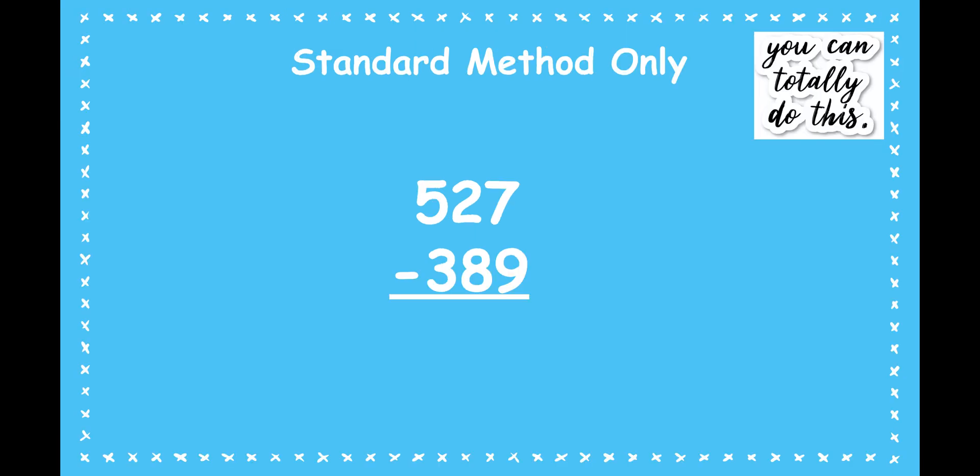Let's do one more problem. This time we're going to take away the place value model, but I just want you to be thinking in your head what's going on when we're ungrouping. Think about the place value involved. I have 527 minus 389. And notice the place values are lined up. Now you can pause the video and solve the problem on your own or solve it along with me.